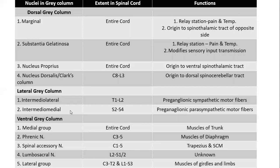Knowing the outflow levels of sympathetic and parasympathetic helps memorize the locations and functions of these nuclei. The intermediolateral nucleus, associated with the sympathetic nervous system, is located from T1 to upper L2 — thoracolumbar — and gives rise to preganglionic sympathetic motor fibers. The intermediomedial nucleus, associated with parasympathetic, is located at S2 to S4 and gives rise to preganglionic parasympathetic motor fibers.